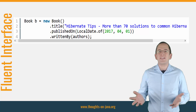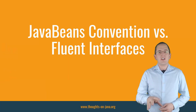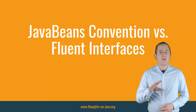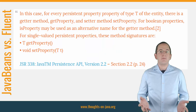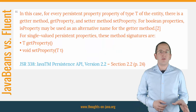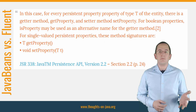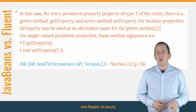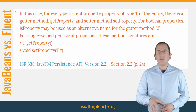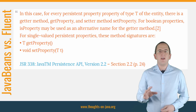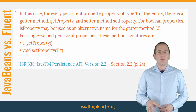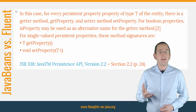Unfortunately, that's not as easy as you might expect. The JPA specification requires your entities to follow the JavaBeans introspector convention. It says that for every persistence property of type T of the entity, there is a getter method getProperty and a setter method setProperty. For Boolean properties, isProperty may be used as an alternative name for the getter method. For single-valued persistence properties, these method signatures are T getProperty and void setProperty.